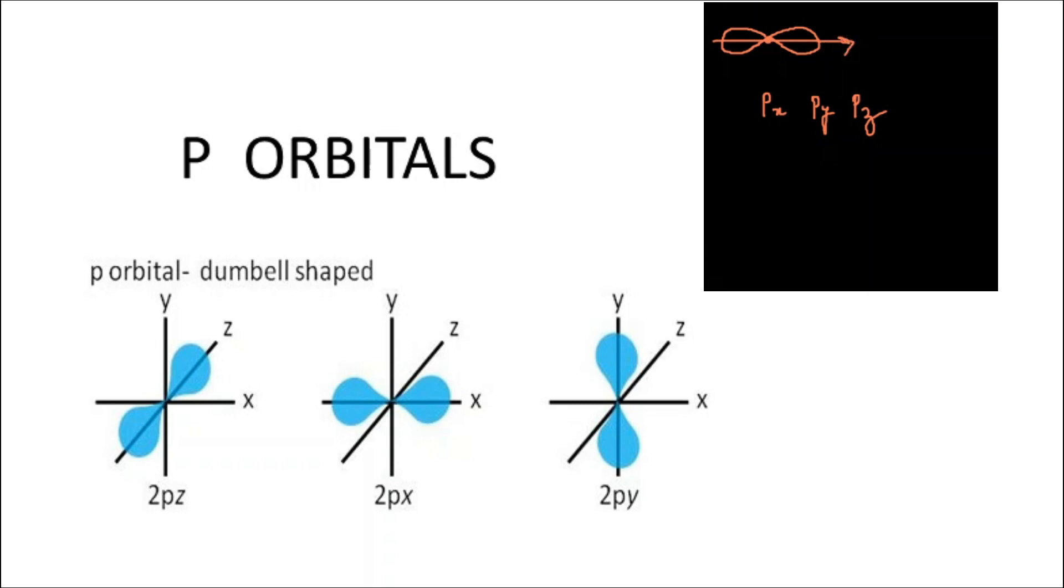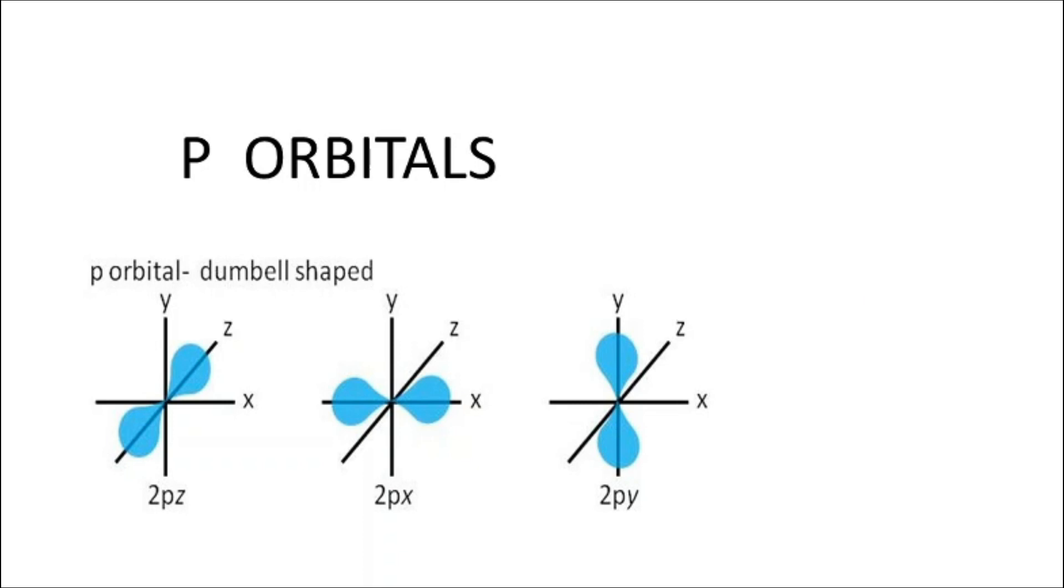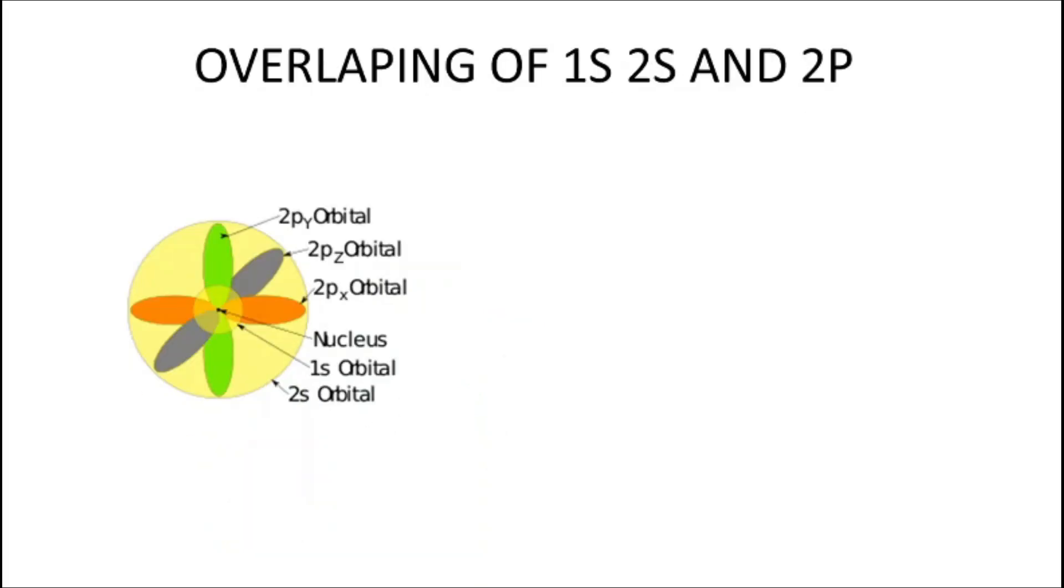Between the two lobes lies the node. The node is the point where no electron can be located. There are two different electron density regions in p orbitals: one is positive, the other is negative. We have talked about nodes - the point where electrons cannot be located. More nodes means higher energy.